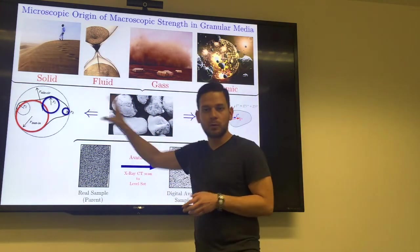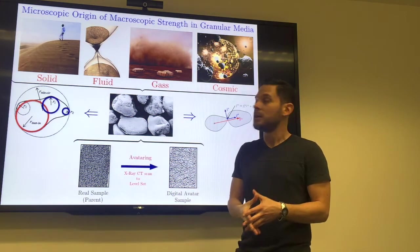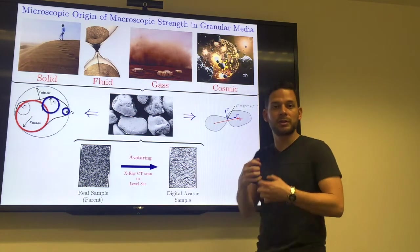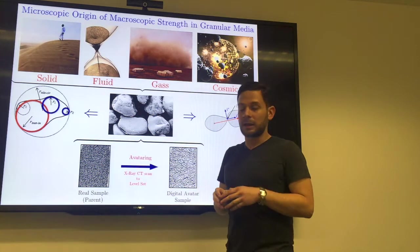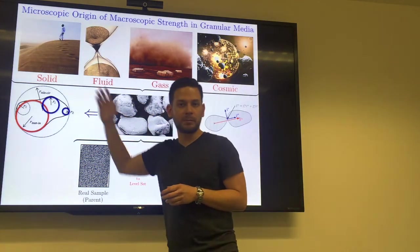Particle morphology, which is the study of shape, is important also for the strength of the material. At the grain scale, we have all these ingredients: contact forces, inter-particle friction, the shape of the grains, that all contribute to the macroscopic behavior of these materials.